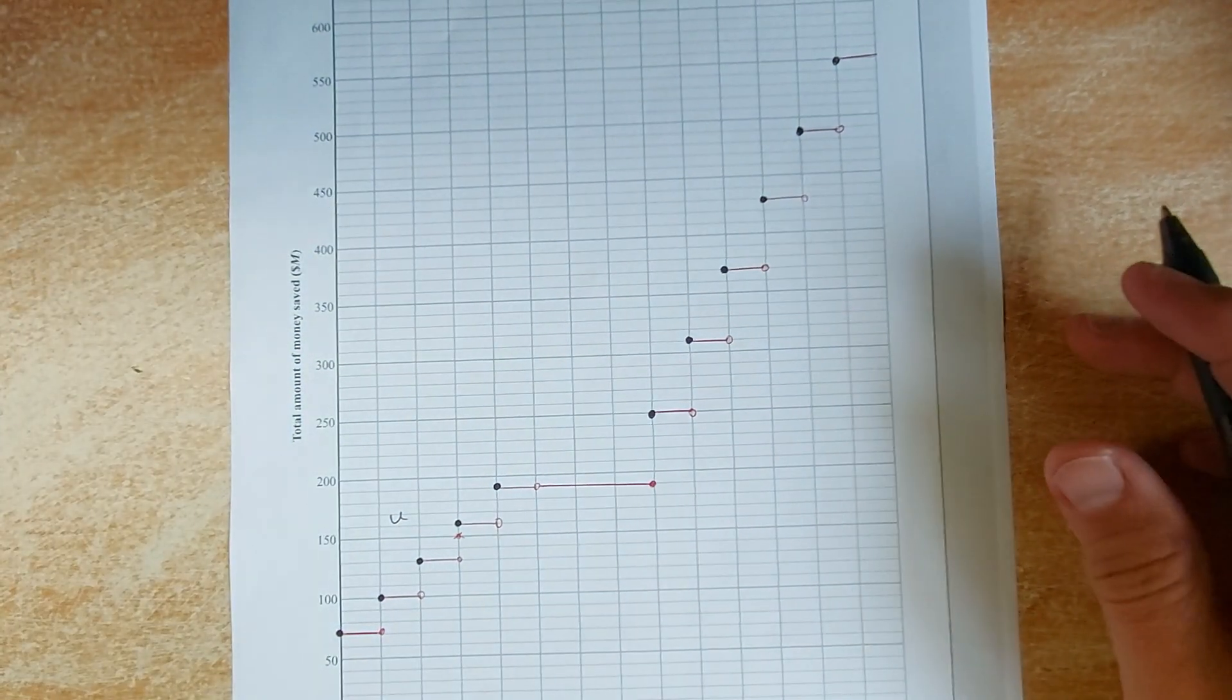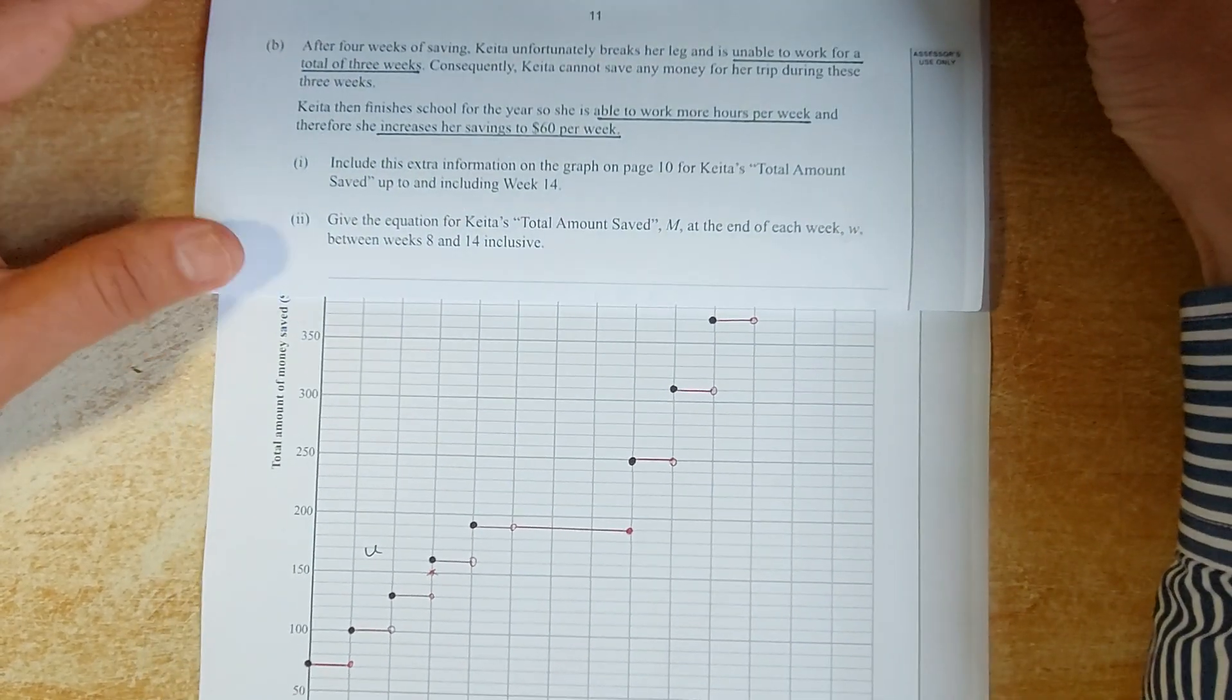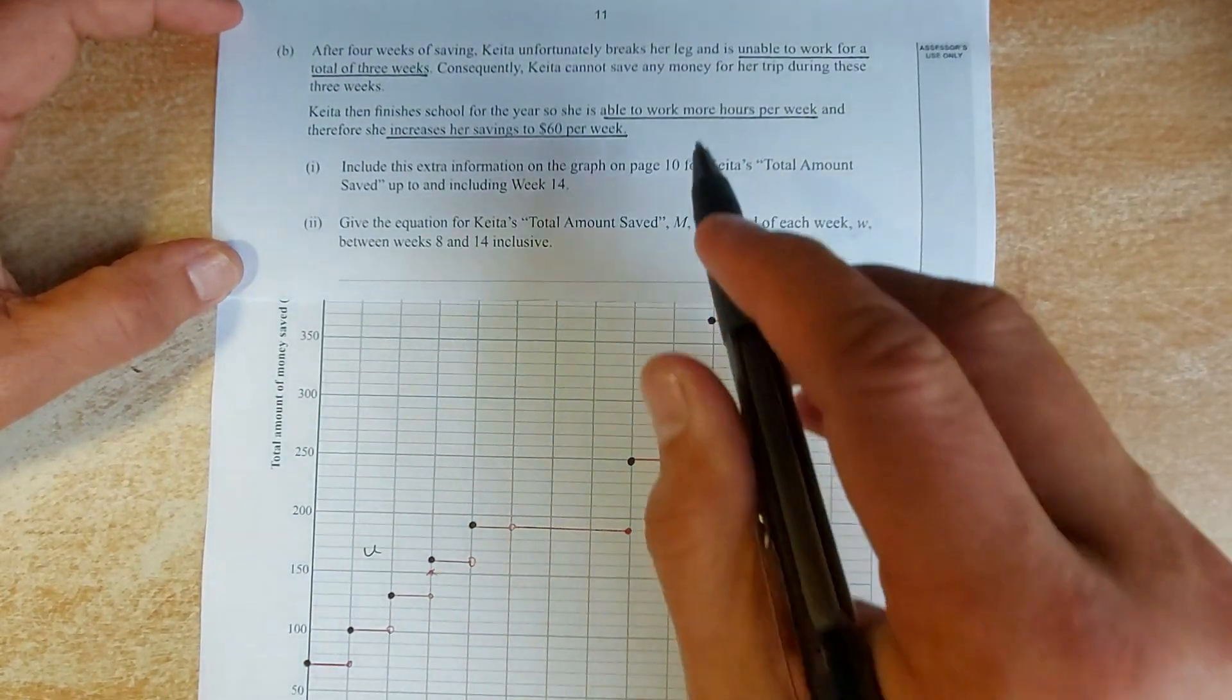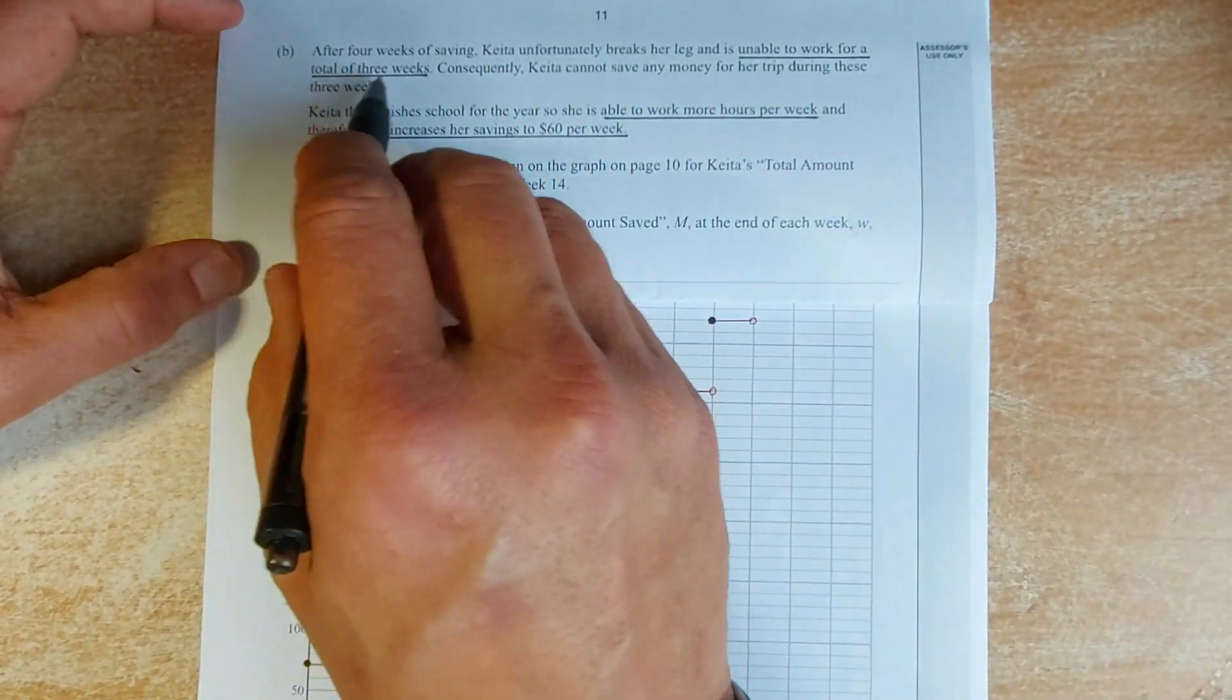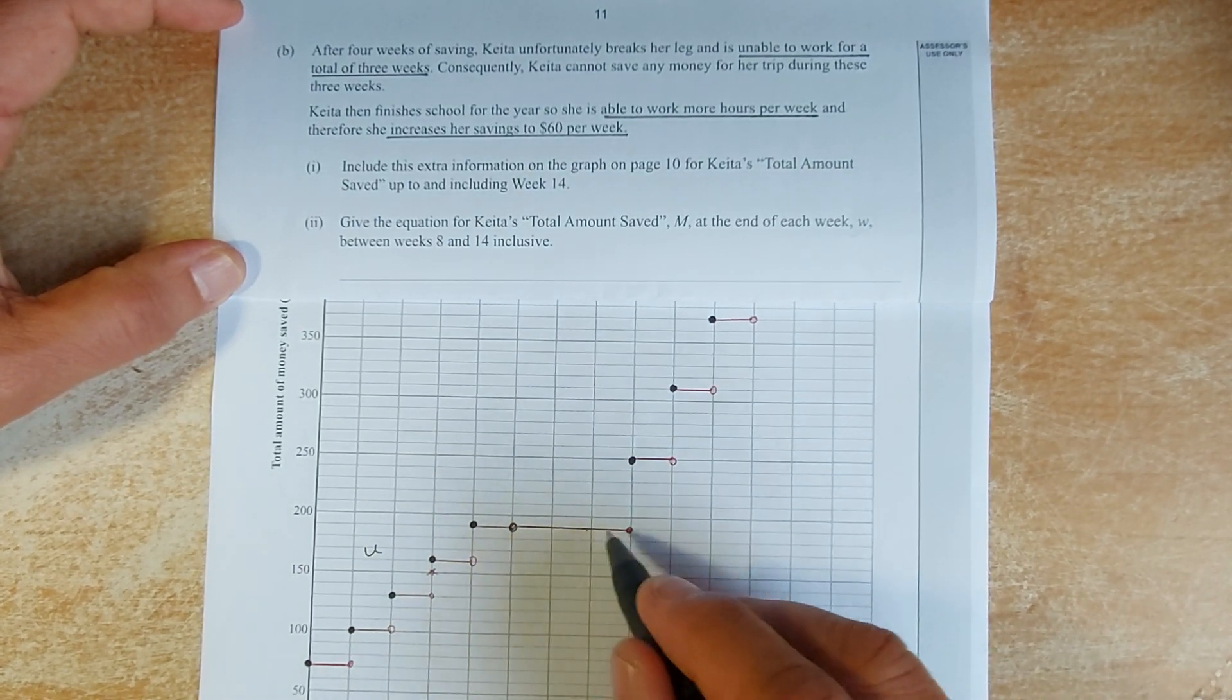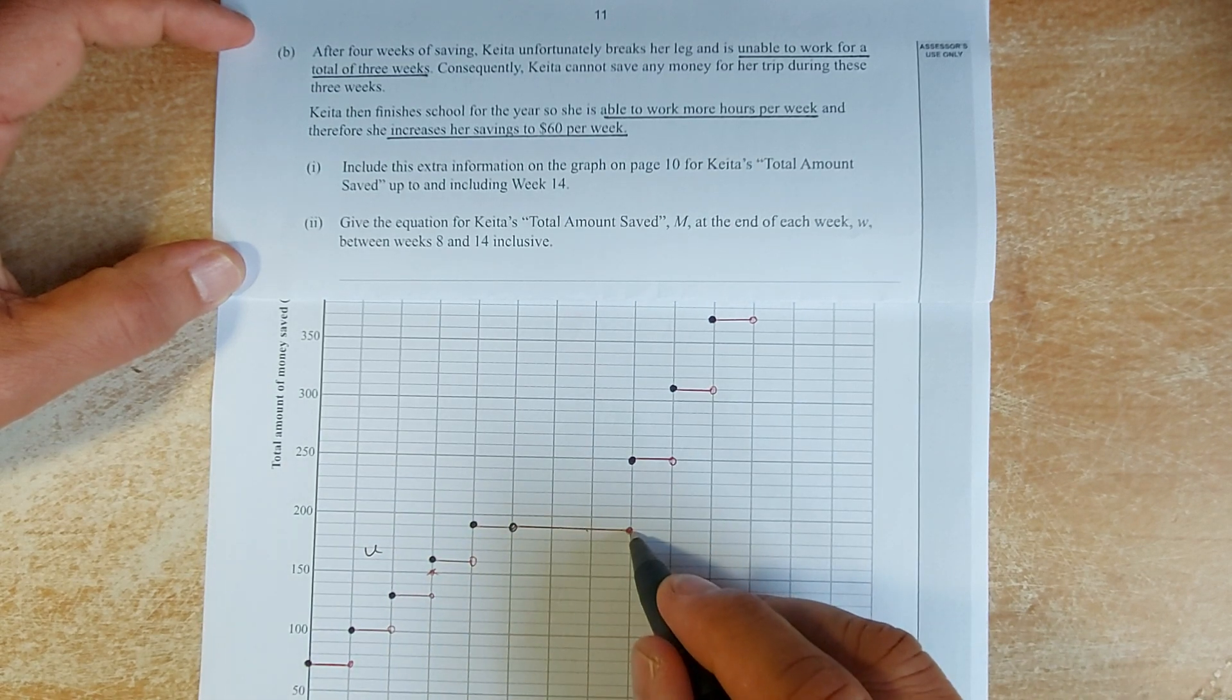Then, the next story comes in, and it says that after 4 weeks, Kita broke her leg. So, after a total of 3 weeks, so from here, is the last day of work. She is going to not work for another 3 weeks. So, that is why her salary still remains at $190.